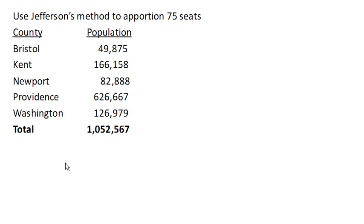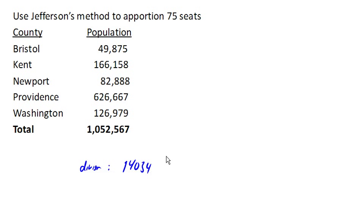So now we're going to use Jefferson's method to apportion these 75 seats in Rhode Island. Our original divisor was 14,034-ish, and that ended up giving us 72 of the 75 seats allocated.